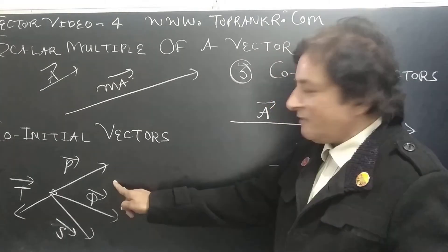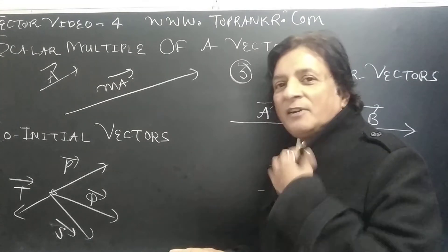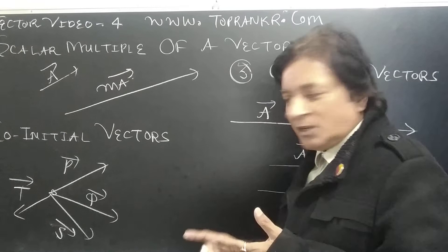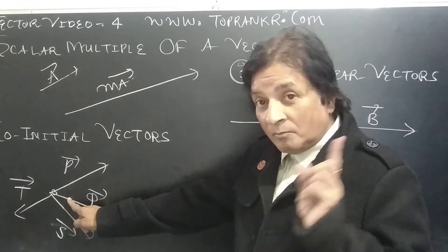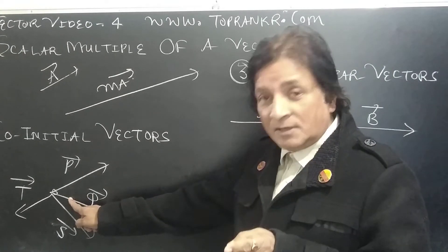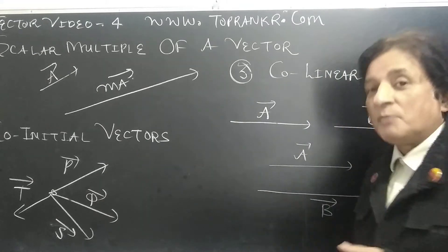Co-initial vectors - you know in the definition, origin is same, initial point is same. When number of vectors have the same initial point, what do we call them? Co-initial vectors.